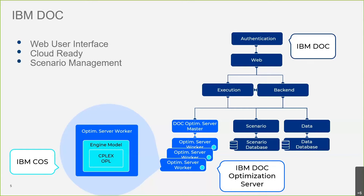By connecting to your optimization engine inside a service available through the optimization server, you can set up or generate a whole application that takes care of all the features you want for a business user or production application. There is a web user interface, and the architecture allows deployment on the cloud very simply — this is a microservices architecture with Docker containers. There is scenario management included, and a place for authentication and authorization.